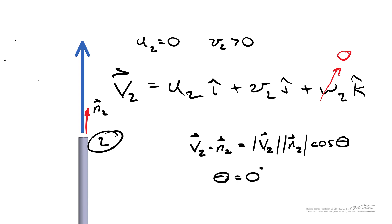In this case, the vectors point in the same direction, so the angle equals zero. The cosine of zero equals 1, and the magnitude of the unit normal is 1. Therefore, v2 dot n2 equals the magnitude of the velocity leaving at location 2, which is a positive quantity.